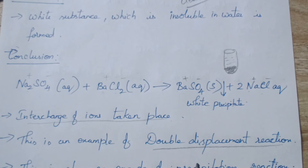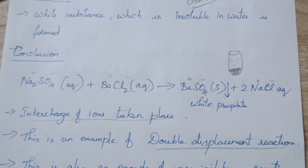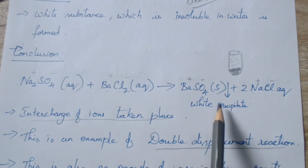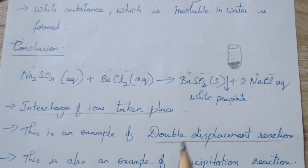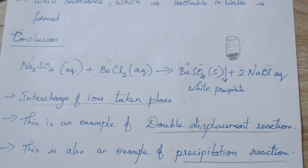Double displacement reaction — we have studied this, right. What is happening? Simple interchange of ions. In a displacement reaction, a more reactive metal replaces a less reactive metal or non-metal. But here in the double displacement reaction, only the interchange of ions takes place. Since a precipitate is formed in this reaction, we can also call this a precipitation reaction. This is Activity 1.10 — it shows double displacement reaction and is also an example of precipitation reaction.